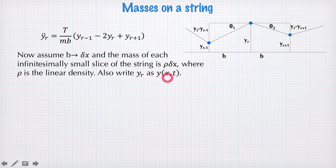We also write yr as a function of x and t, so we have y(x,t). So b goes to δx, m goes to ρ times δx.